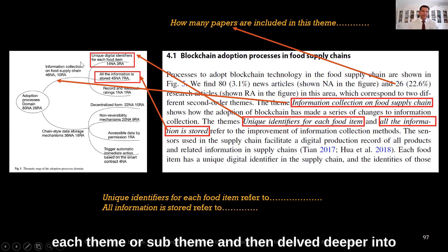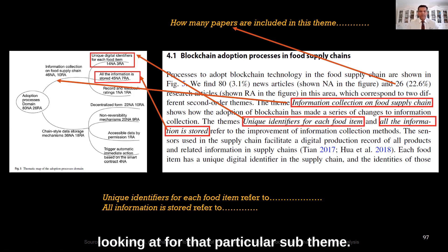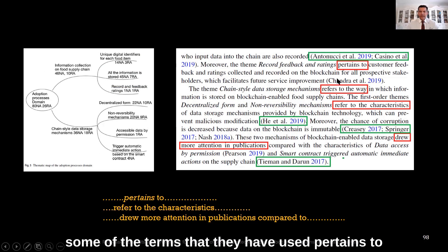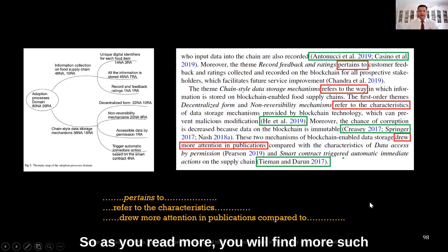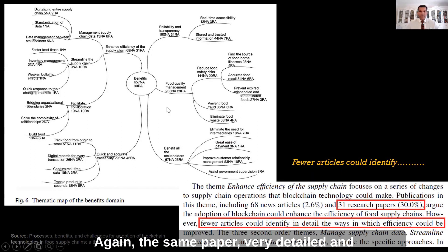What they have done is picked up each theme and sub-theme, then delved deeper into it and explained the main observations or findings for that particular sub-theme. You can see some of the terms they used: 'pertains to,' 'refers to,' 'drew more attention in the publications compared to.' As you read more, you will find such patterns to incorporate in your writing. The same paper also provides a very detailed and thorough thematic map for the benefits.